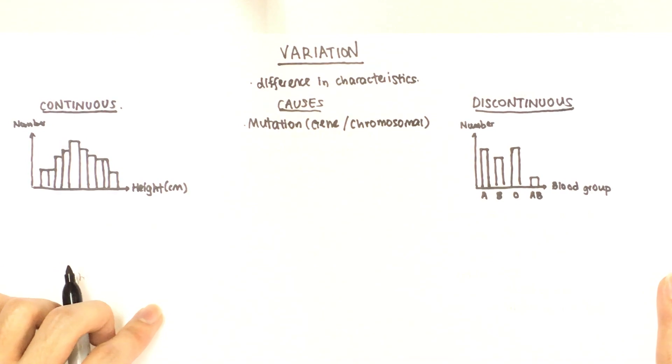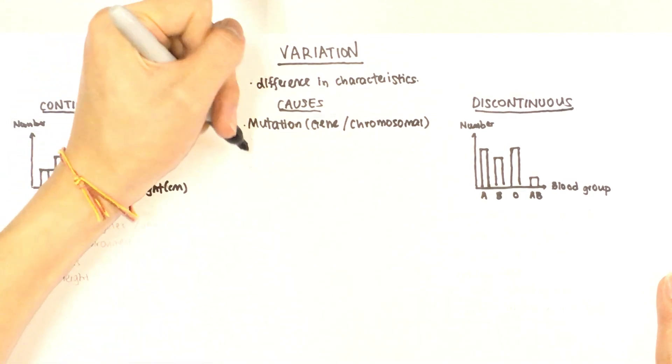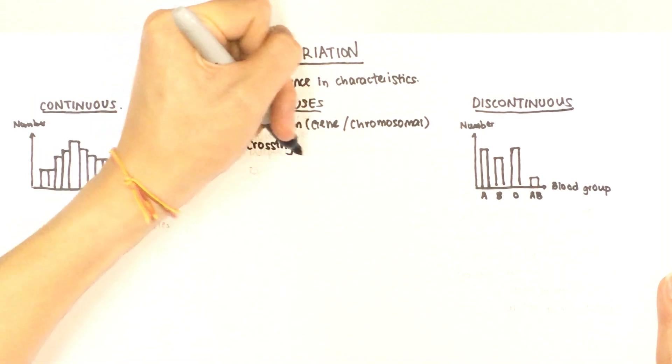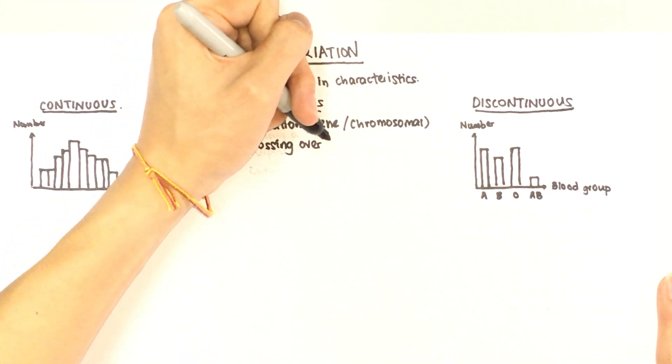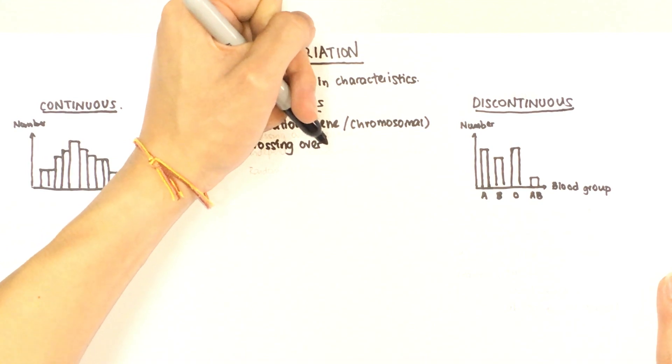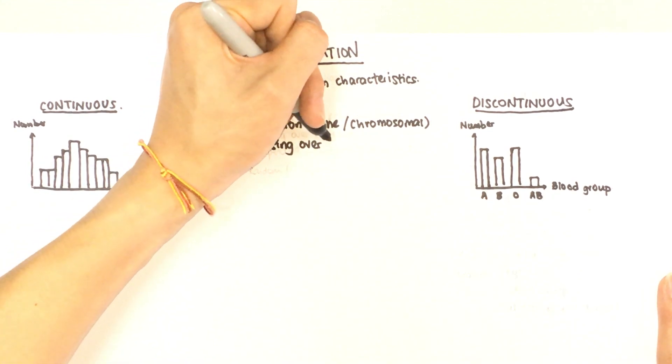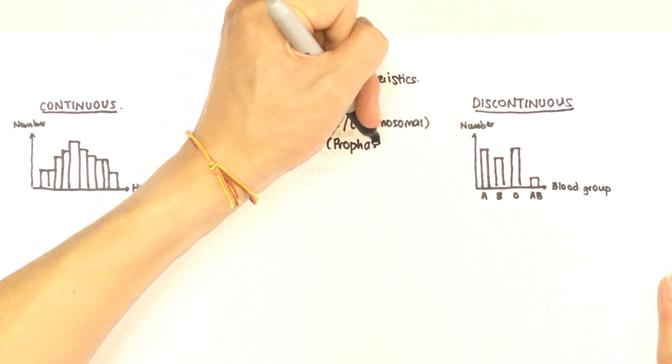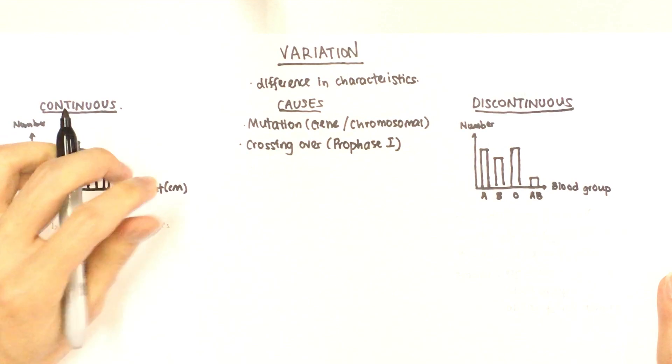The next cause of variation is crossing over. Now crossing over is a process that allows the exchange of genetic material between homologous chromosomes and that occurs in prophase 1 of meiosis 1.